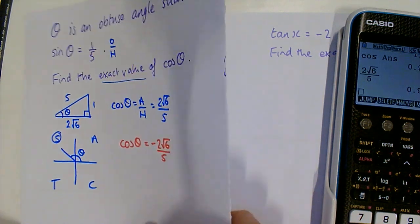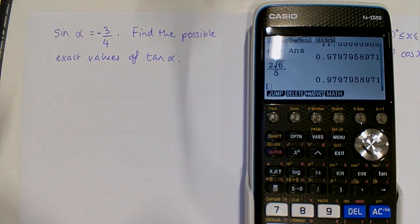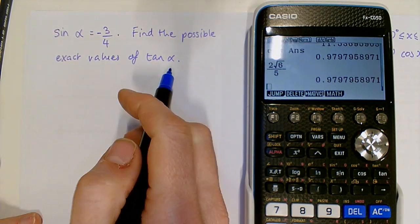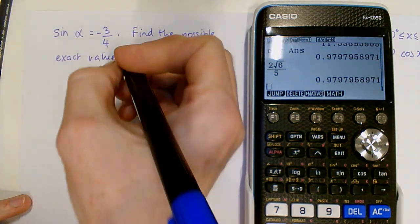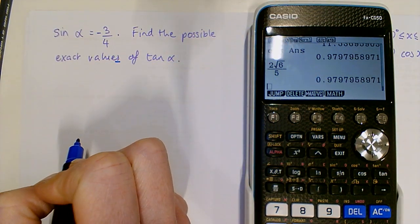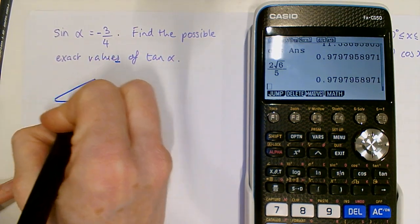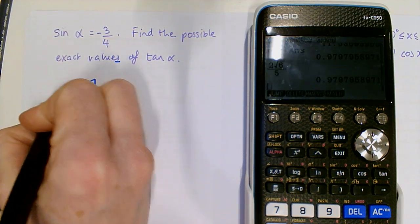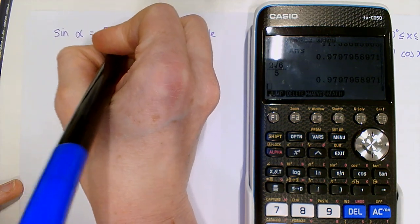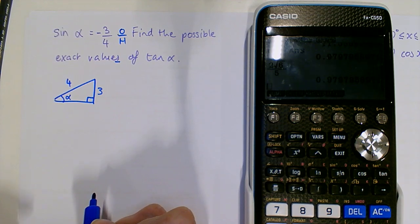Right. Let's try a different example. So we've got sine of alpha this time is minus 3 quarters. Find the possible exact values of tan alpha. So we know we've got values, so we might have more than one answer. We start the same from our sine ratio. We can draw a nice right angle triangle. We can pick any corner to be our angle alpha. And we know that sine is opposite over hypotenuse, so we're putting 3 over 4. And I'm just ignoring the minus at the moment.